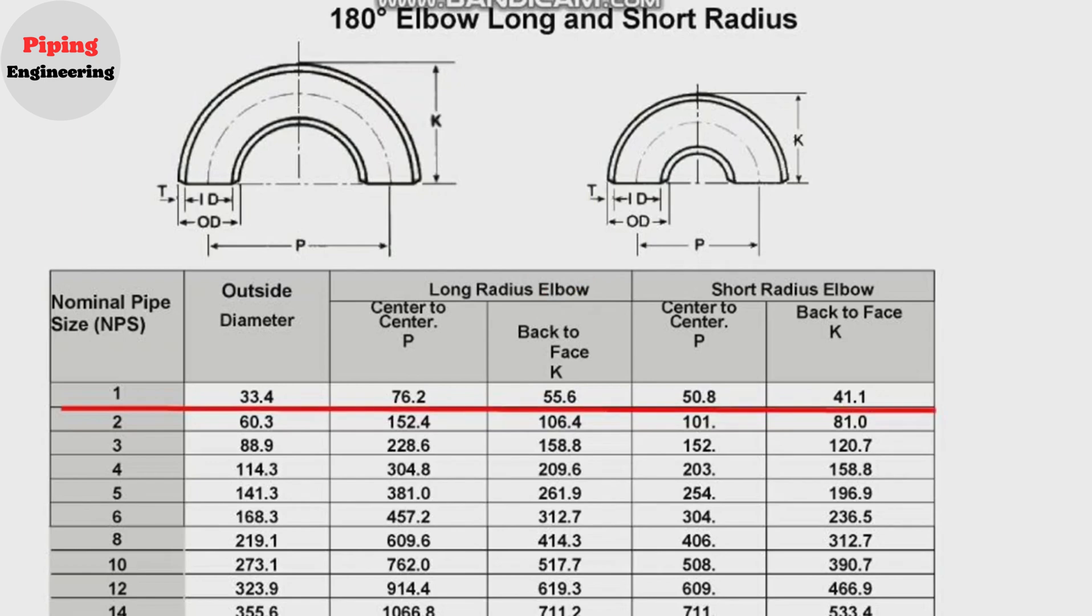For short radius elbows P, center to center, is 50.8 mm. Back to face, K, is 41.1 mm. Also you can see another size elbows dimensions in this chart.